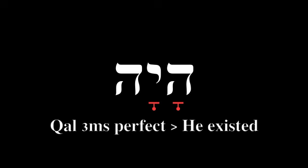The a-class vowels indicate the presence of a simple active verb conjugated in the perfect tense. This is a third masculine singular perfect conjugation of the verb haya, meaning 'he existed.' Now if I want to conjugate this verb to reflect an imperfect tense, it will sound different.